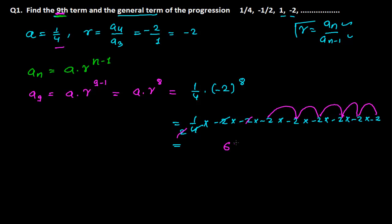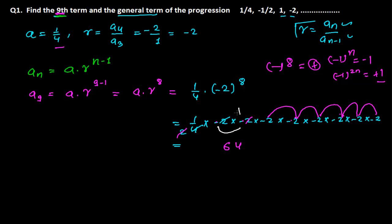Now let's address the sign. There are eight minus signs, so it's (-1)^8. Since 8 is an even number, the result is positive. We know that (-1) to an odd power is -1, and (-1) to an even power is +1. You can also verify by pairing: minus × minus = plus, repeatedly.